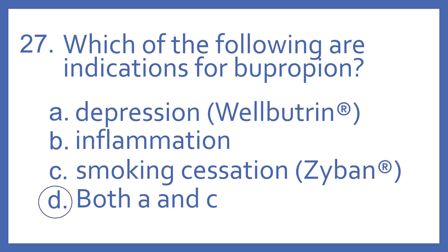And the answer is D, both A and C. Bupropion is used for both depression and smoking cessation. In depression, its brand name is Wellbutrin, and for smoking cessation, the brand name it goes by is Zyban. It is classified as an NDRI antidepressant.